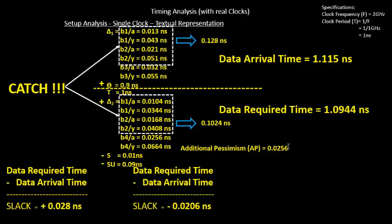There are two ways to view this pessimism: either 25.6 ps got accidentally added to the data arrival time, or 25.6 ps got removed from the data required time. To correct the slack calculation, we need to either remove the pessimism from data arrival time or add it to data required time. We will add 25.6 ps to the data required time, making the common clock path delay 128 ps on both sides — now balanced.